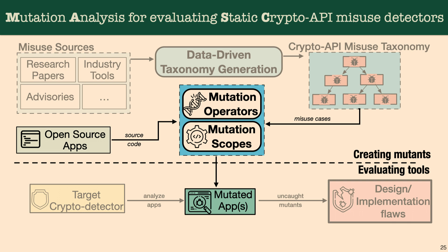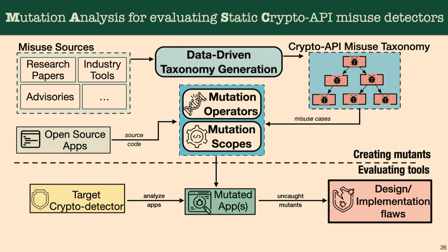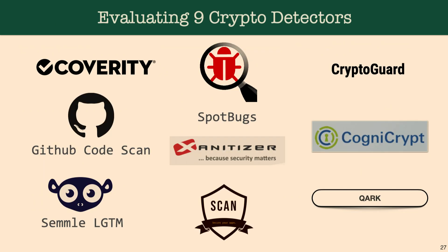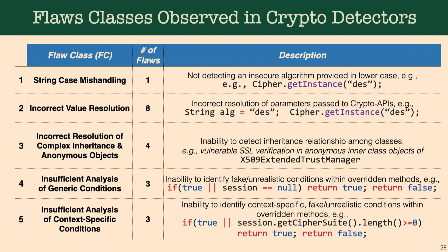The rest is simple: we then test these mutated applications using the cryptodetectors to see if they are killed. If they're not, we go more in depth to understand what's going on. We applied this approach on nine cryptodetectors — including tools like CryptoGuard and GitHub code scan — and found 19 previously unknown flaws in these detectors.